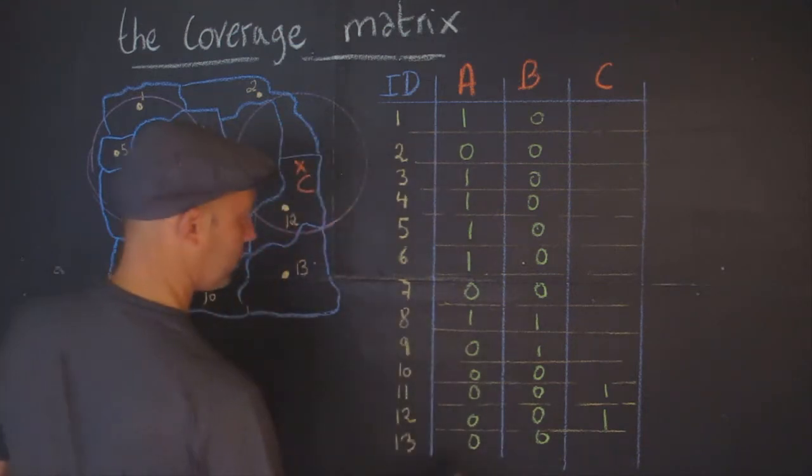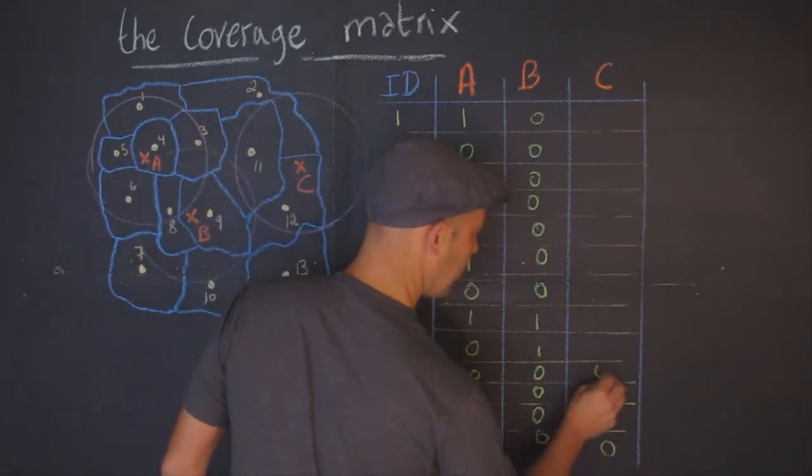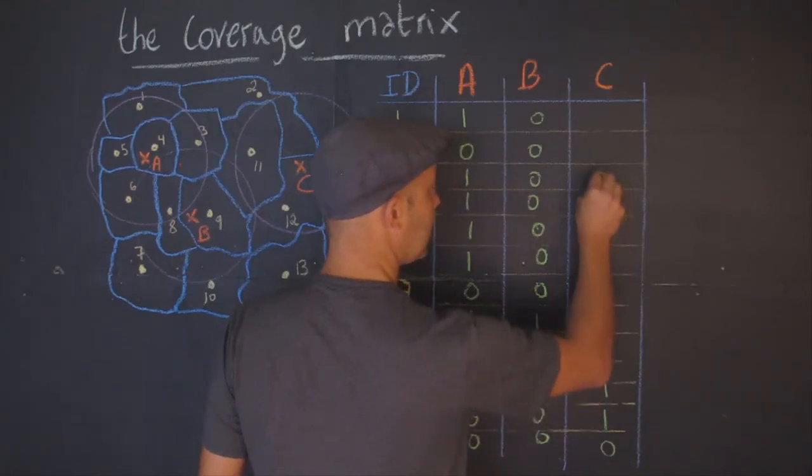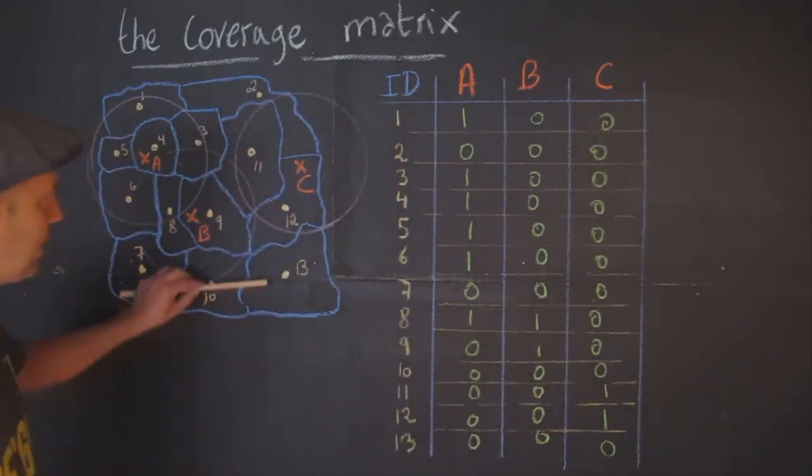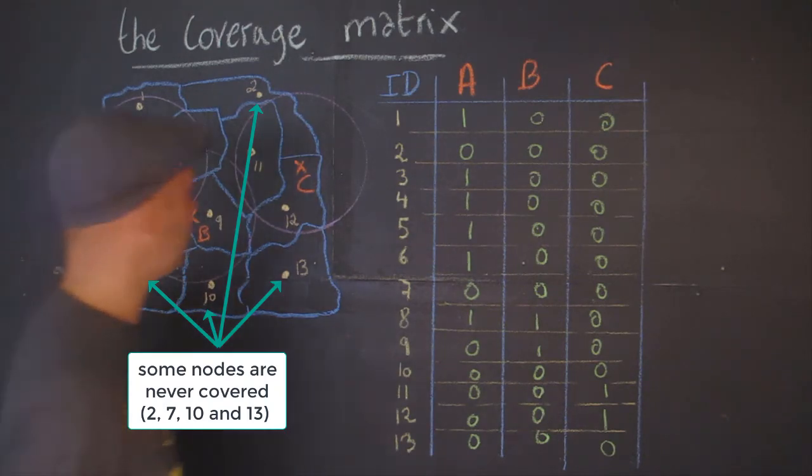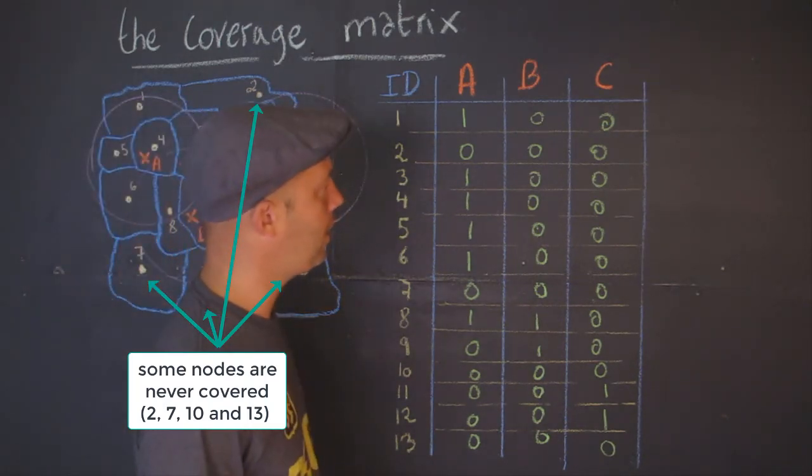There are a couple of interesting things that can be seen from this matrix. For instance, we can see that node 13 can never be covered, and 10 can never be covered, and 7 can never be covered as well. So not much we can do about these guys.